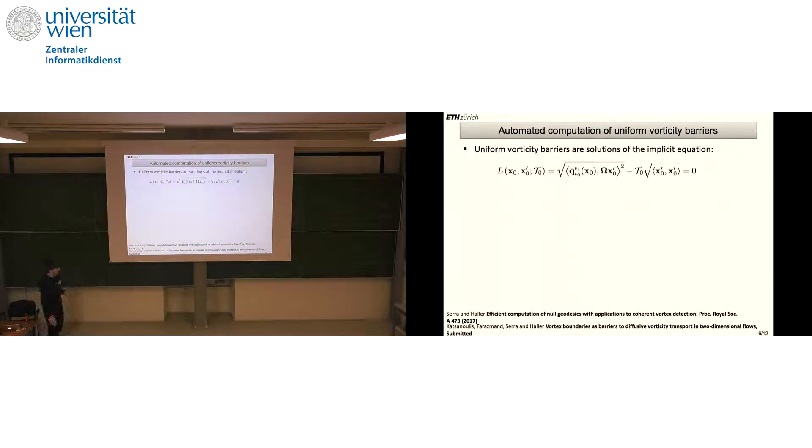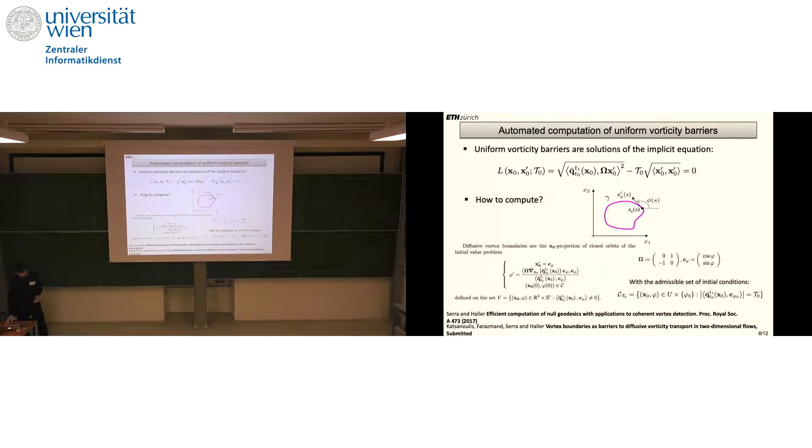I haven't said anything about how to actually compute these barriers. The previous conservation law can be shown equivalent to this expression. This is rescaling invariant, which allows us to introduce an arc length parameterization for x₀' for the yet unknown curve.